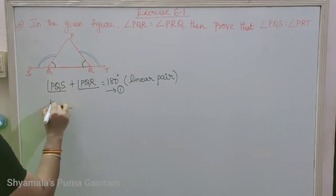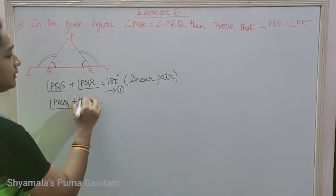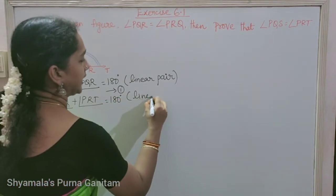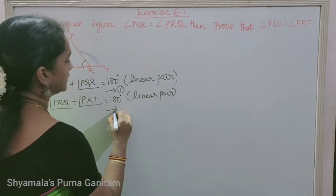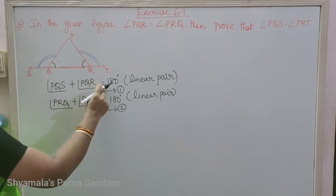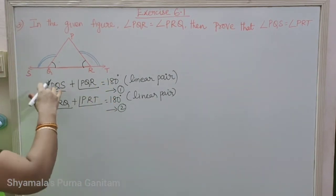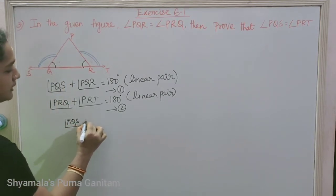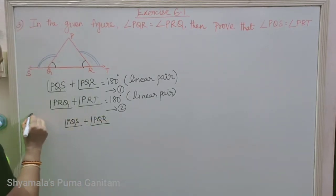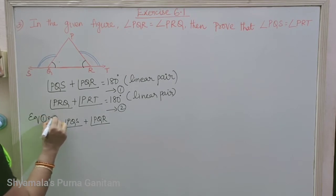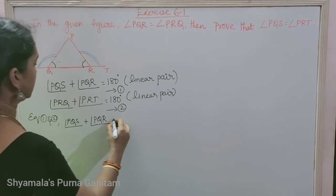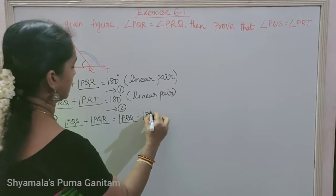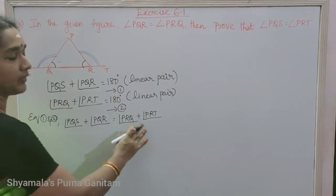Similarly on the other side: angle PRQ plus angle PRT equals 180 degrees. This is also a linear pair. This is the second equation. Since the RHS of both equations is equal, we can equate the LHS — that is, angle PQS plus angle PQR equals angle PRQ plus angle PRT.